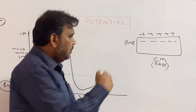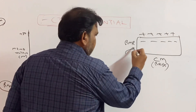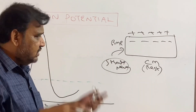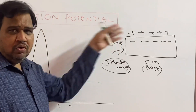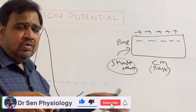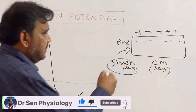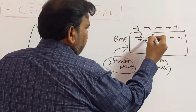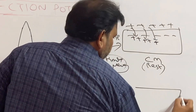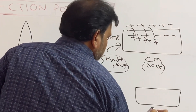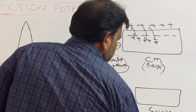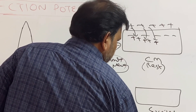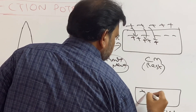But now when I give a stimulus — just understand carefully — I am giving a stimulus to the neuron, I am exciting the neuron. So what will happen is these positive ions try to come in. So once the membrane is excited, positive charge comes in.